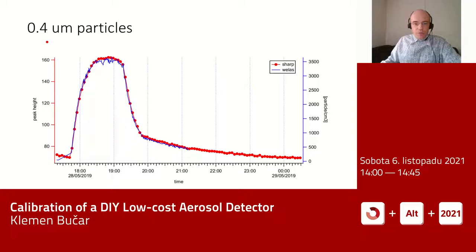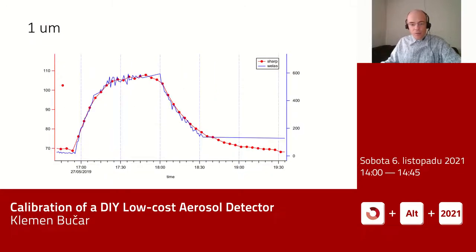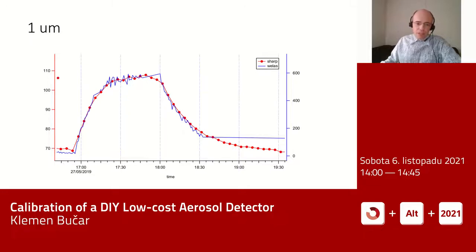Here are the first results. The red curve is our sensor's peak height in millivolts and the blue curve shows the true particle concentration in particles per cubic centimeter from specialized equipment. We started in the afternoon, slowly raised the concentration, kept it constant for about half an hour, then decreased it. Our low-cost sensor showed almost the same curve as the professional equipment. We repeated this for 0.4 micrometer, 4 micrometer, and 1 micrometer particles — in each case, the correspondence was quite good, though calibration between the two scales is still needed.